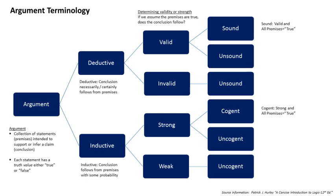Inductive reasoning is also known as hypothesis construction because any conclusions made are based on current knowledge and predictions. As with deductive arguments, biases can distort the proper application of inductive argument, thereby preventing the reasoner from forming the most logical conclusion based on the clues. Examples of these biases include the availability heuristic, confirmation bias, and the predictable world bias.